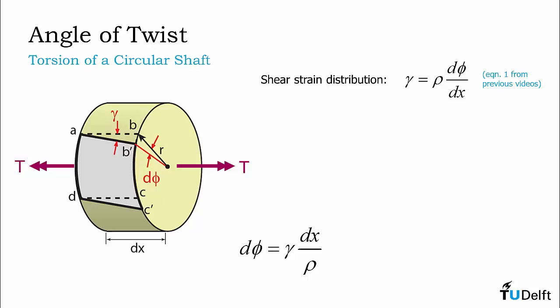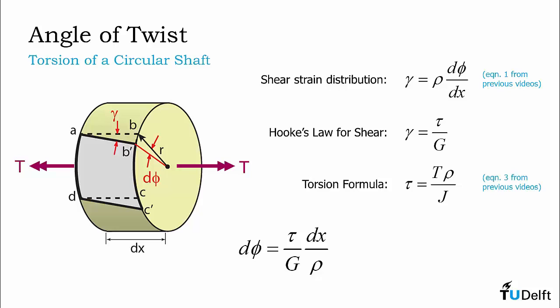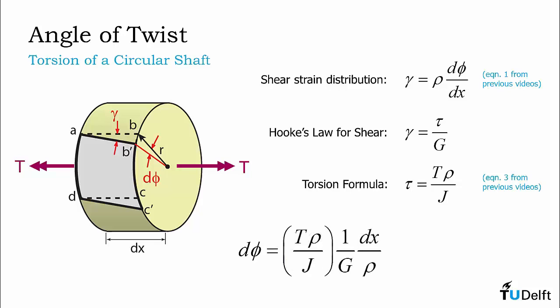Now that we have the angle of twist in terms of shear strain, we need to apply Hooke's law in order to convert from strains to stresses. In an earlier unit on material properties, we established that shear stress and shear strain are linearly related through the shear modulus G. We can use Hooke's law to rewrite the equation for angle of twist in terms of shear stress. Next, we can apply the torsion formula relating stress to the torque derived earlier. Substituting this into the formula, we obtain an expression for d-phi. Collecting terms and simplifying, we obtain the following expression for d-phi.